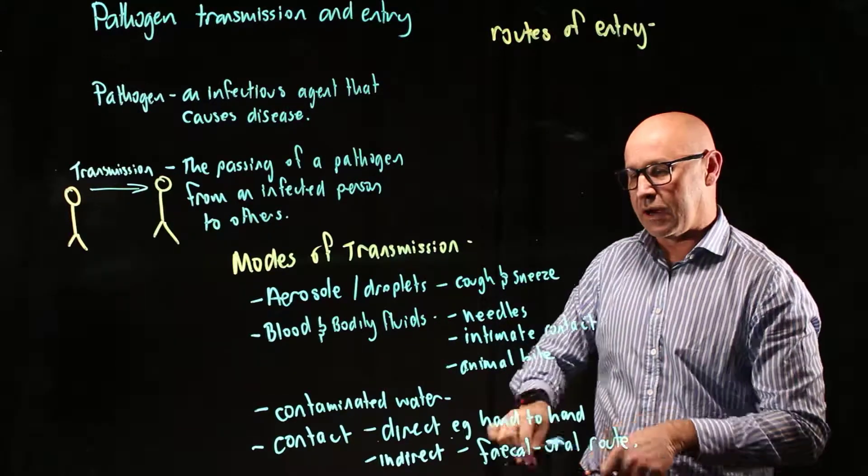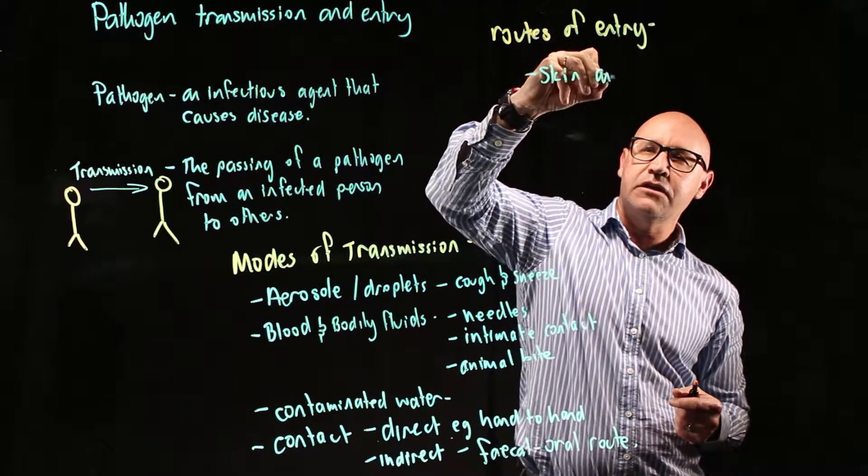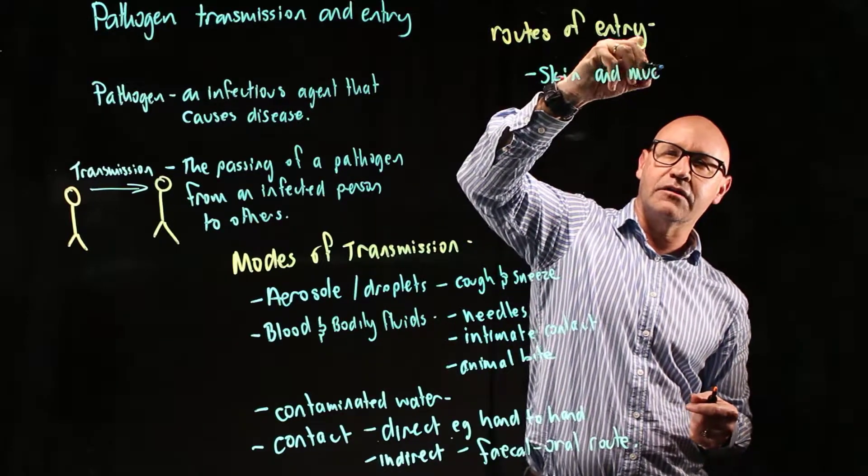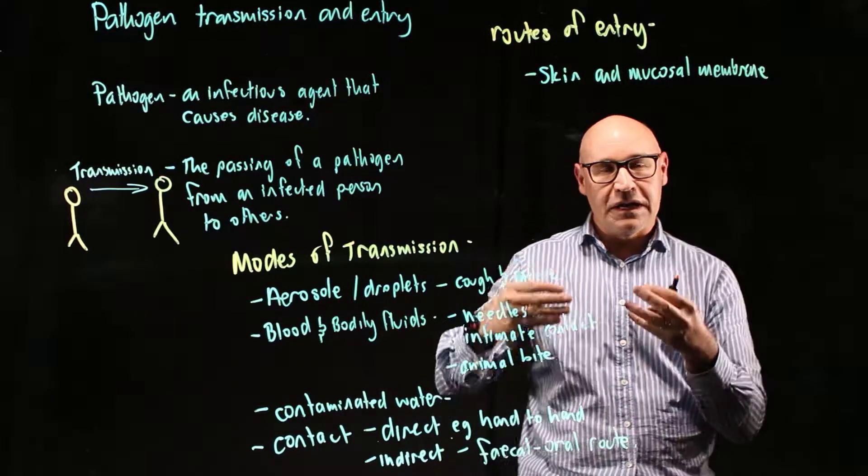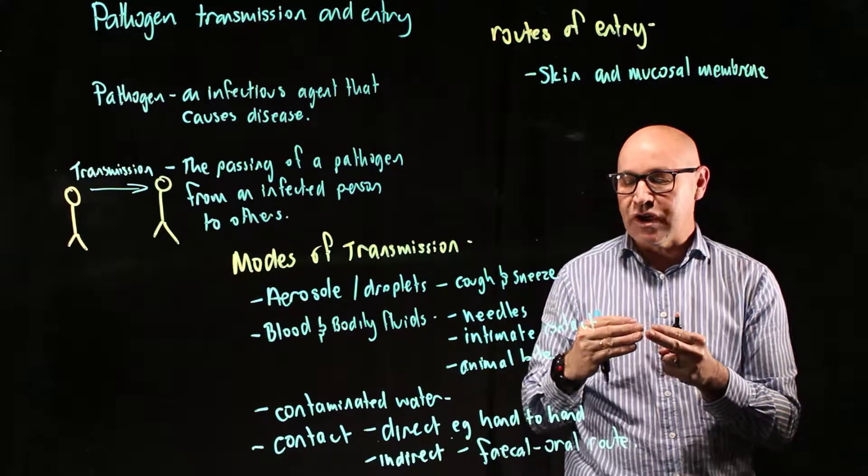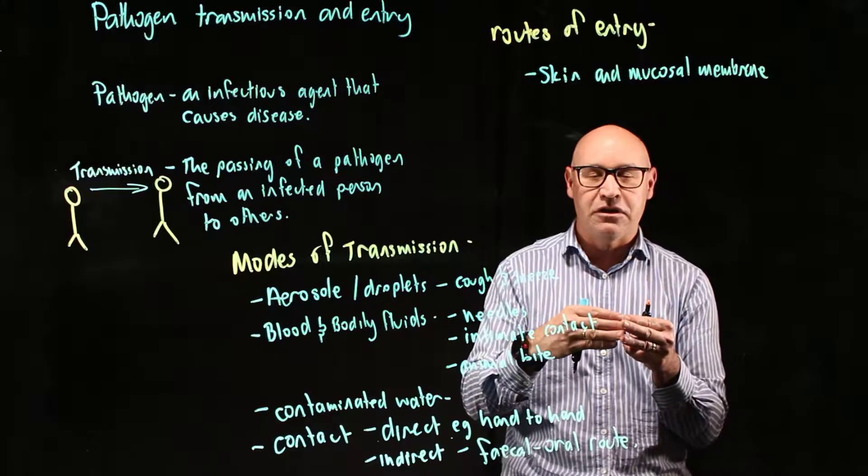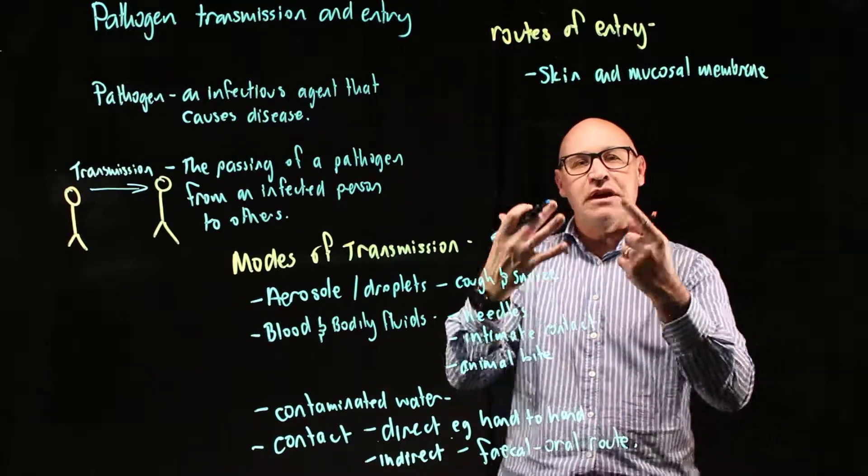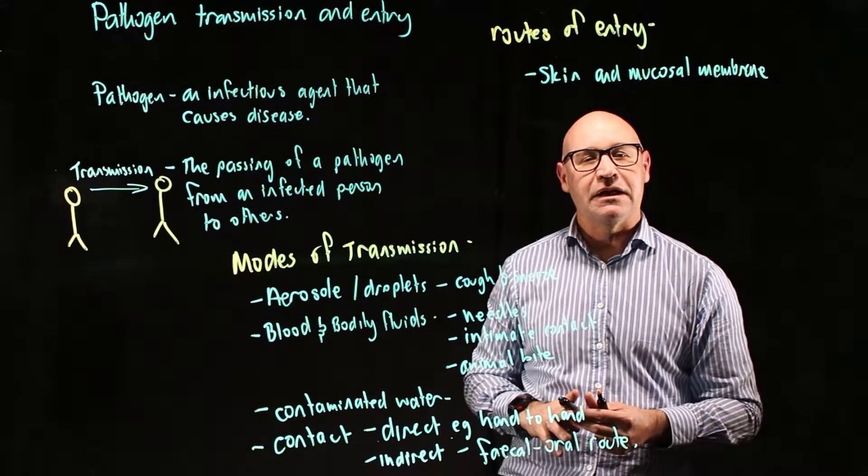Now the first one is our skin and mucosal membranes. So first, skin is probably fairly obvious. We need a break in the skin, maybe a cut, maybe a penetration like a needle or a stick or something that penetrates the skin, a breach in the skin. We've also got these things called mucosal membranes.